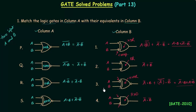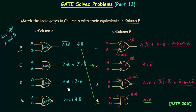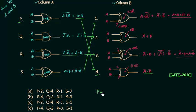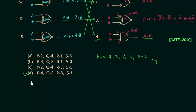Now we have the outputs for all eight gates and we match them. P matches with 4 because both give A complement AND B complement. Q matches with 2 because both give A complement OR B complement. R matches with 3 and S matches with 1, as both pairs share the same outputs. The correct answer is option D.